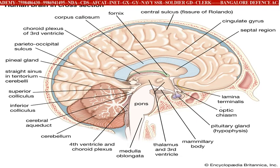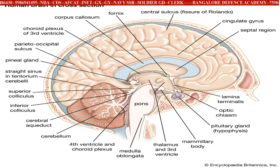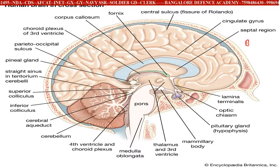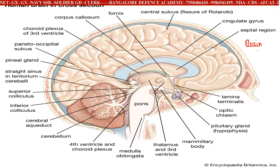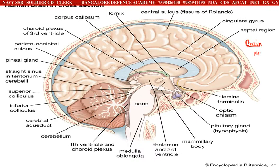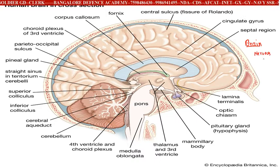The most important part of our human body is the brain. Brain is the most important part, but before understanding what the brain is, let us try to understand how our nervous system functions.